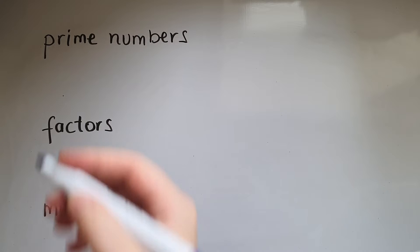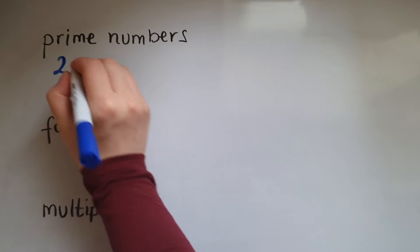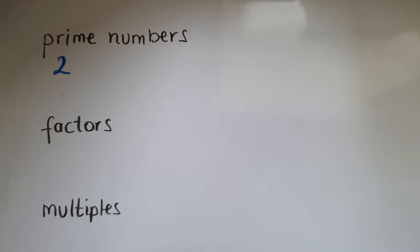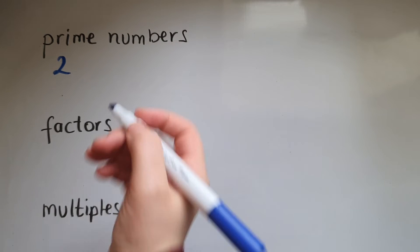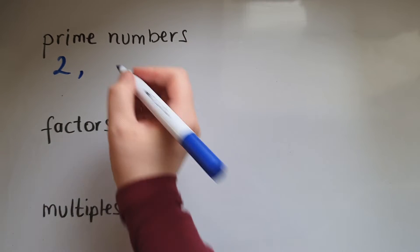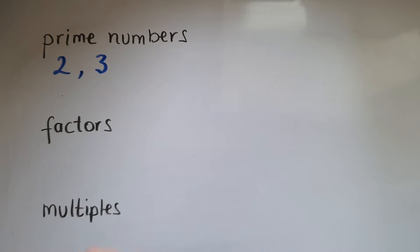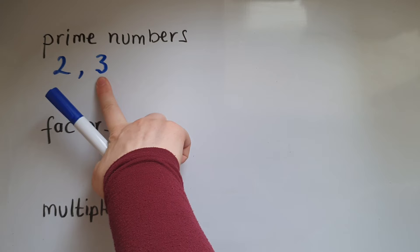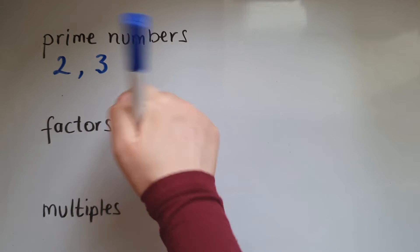Examples include two, because two can only be divided by two and by one and have no remainders. Three as well, because three divided by three gives us one, three divided by one gives us three.